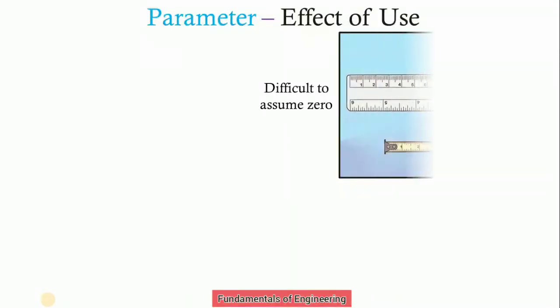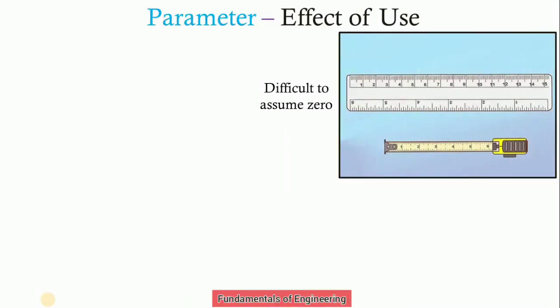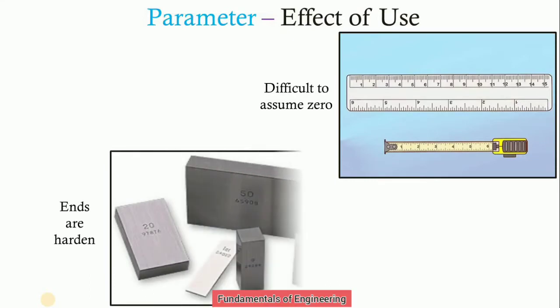Effect of use. If you consider the line standard, it is very difficult to assume zero. By using this image, you can see that it is difficult to assume zero in line standard. For end standard, the ends are hardened, so we can get correct readings. These are slip gauges. The ends are hardened and based on these parallel faces, we can measure the dimension.